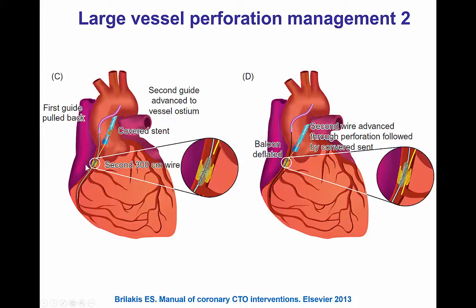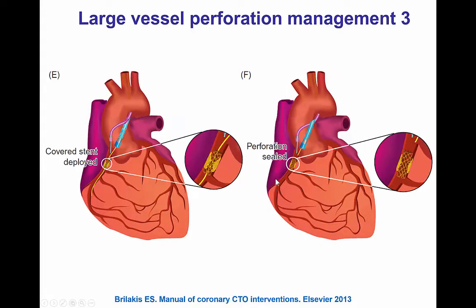Here's an example of the dual guide catheter technique. The perforation happened and a balloon is inflated through the first guide catheter to seal the perforation. Then a second guide catheter is advanced into the vessel ostium and a second guide wire is inserted past the area of perforation. Then the covered stent is delivered, the first balloon is removed, the covered stent is deployed, and that leads to sealing of the perforation.